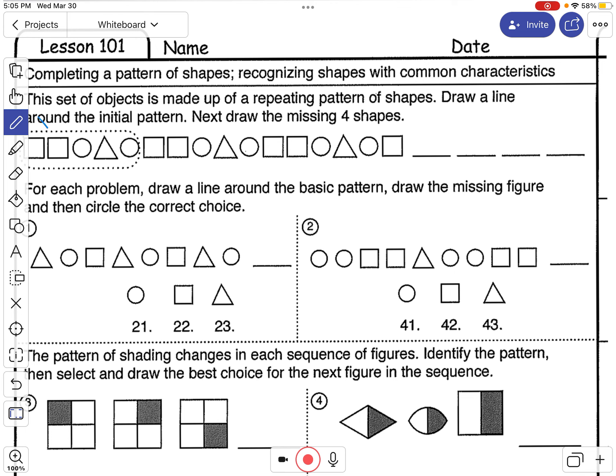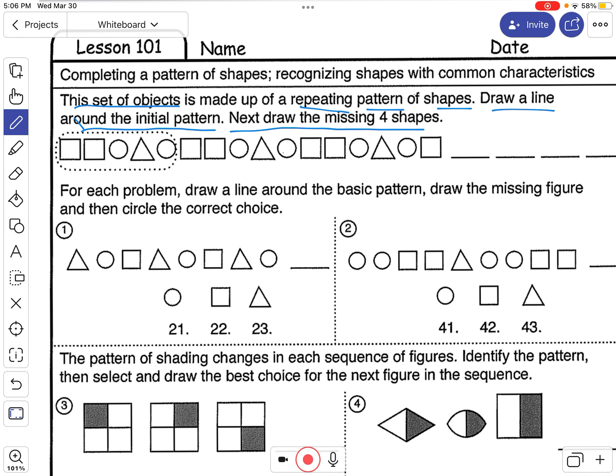Read along with me. This set of objects is made up of a repeating pattern of shapes. Next, draw a line around the initial pattern, the first part of the pattern. Next, draw the missing four shapes. So a line around it means a circle, basically.